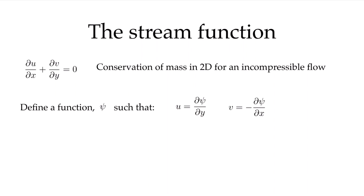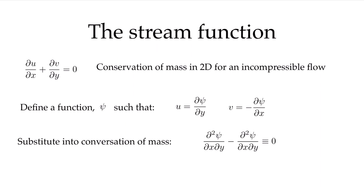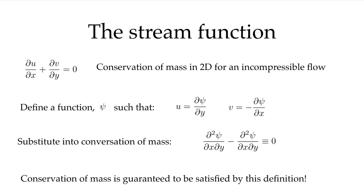We have an expression for u, and we need to take the derivative of u with respect to x, and the derivative of v with respect to y in our conservation of mass equation. Substituting in, we get the second derivative of psi with respect to x and y, minus the second derivative of psi with respect to x and y, which are identical terms — that is identically zero. So this definition of psi guarantees that conservation of mass is satisfied.